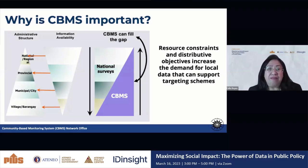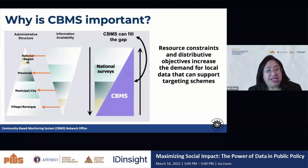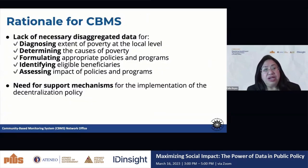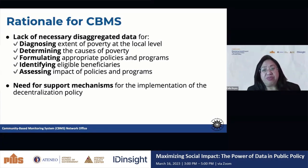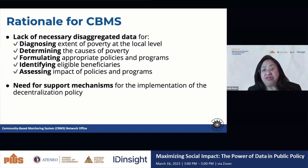So why is CBMS important? As in the case with many other countries, there's very little information at the local levels. Data from national statistics offices provide data at the national, or at best at the provincial level, but very little information at the municipal and barangay levels. CBMS aims to fill in the gap by providing more information at the local level — responding to the lack of disaggregated data for diagnosing the extent of poverty, determining its causes, formulating appropriate policies and programs, identifying eligible beneficiaries, and assessing impact of policies and programs.